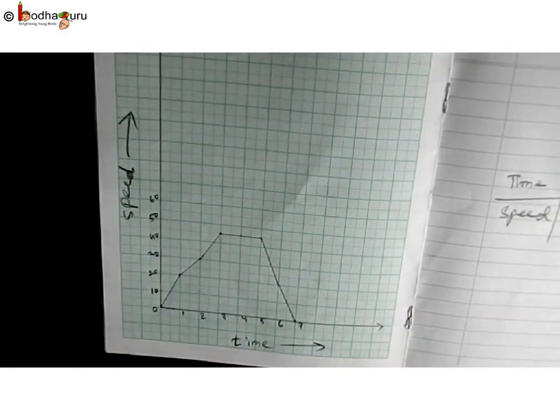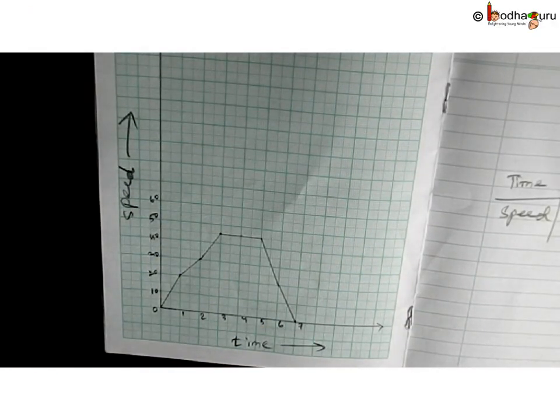So, now seeing this graph, we can easily understand how the train speed changed over the time.